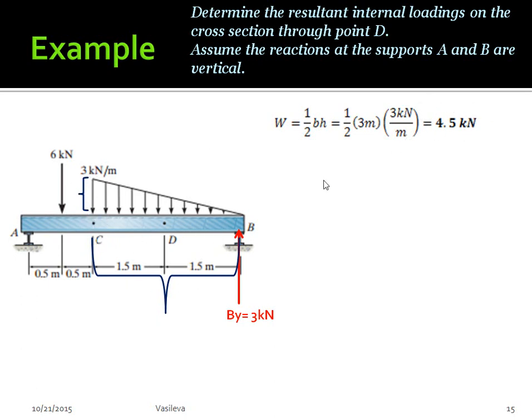We found the distributed load of this entire triangle using the base and height. We got 4.5, but now we want to find the distributed load caused by this little triangle to the right of point D. I used proportions: H1 over B1 equals H2 over B2. I did 3 over 3 equals the unknown over 1.5. I got H2, my height 2, which is this little part, to be 1.5 kilonewtons per meter.